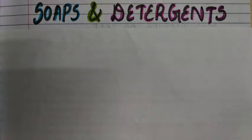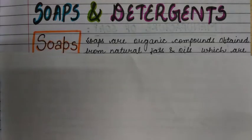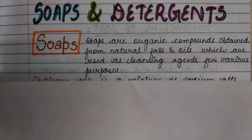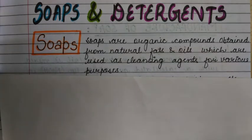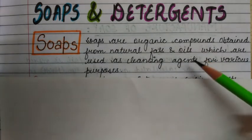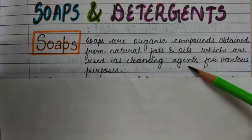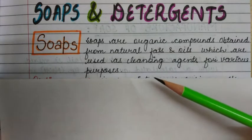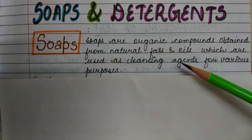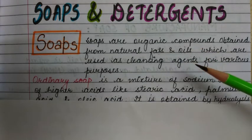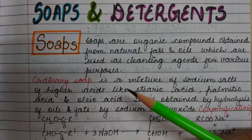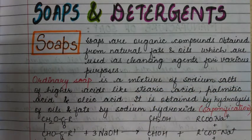The second part of the chapter 'Fats, Oils and Detergents' is soaps and detergents. Let us start with soaps. Soaps are organic compounds obtained from natural fats and oils, which are used as cleansing agents for various purposes. So you know the definition of soaps. Firstly, ordinary soaps.